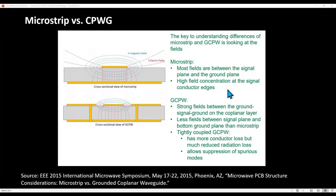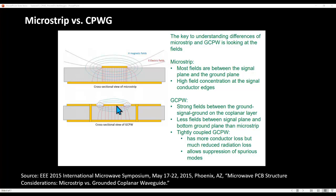The key to understanding the difference between microstrip and grounded CPW is looking at the fields. In microstrip, most fields are between the signal plane and the ground plane, with high field concentration at conductor edges — that's why in EM simulation we focus on properly meshing the edges. In grounded CPW, there is strong field coupling between the ground-signal-ground on the top of the substrate, and comparatively less field between signal and bottom ground plane.